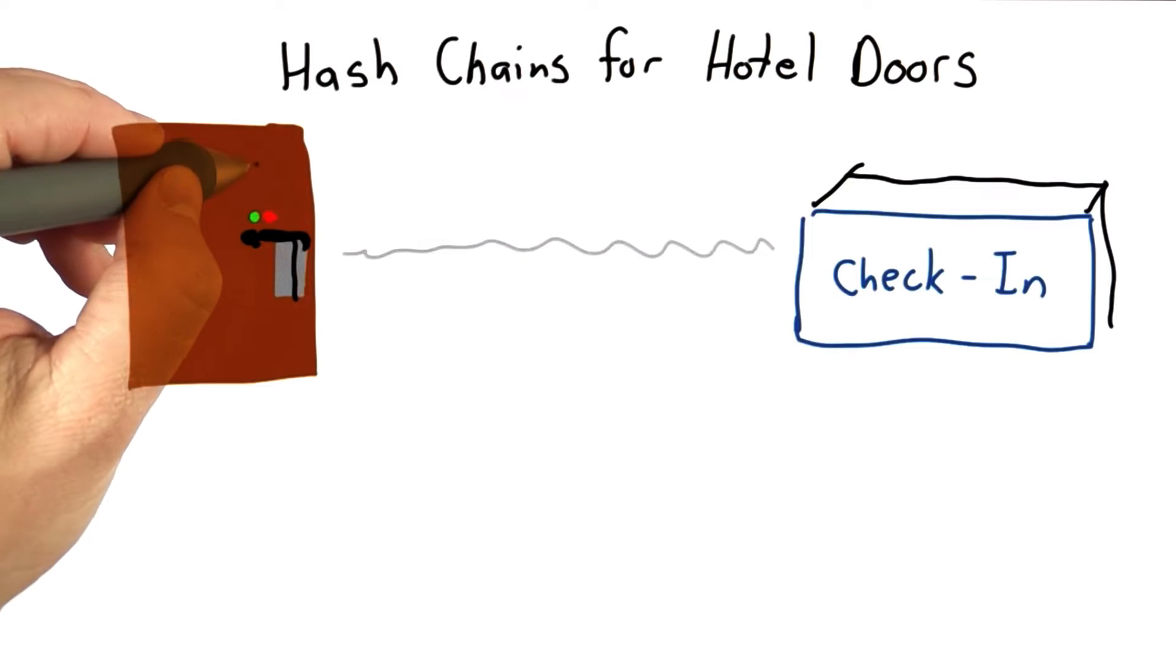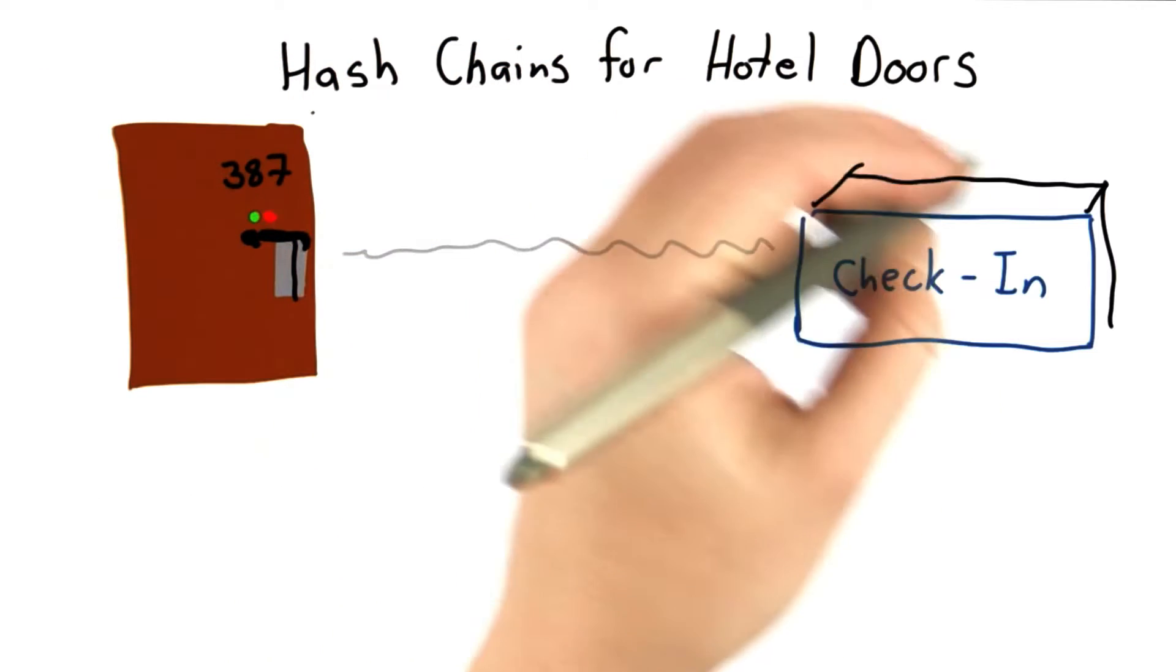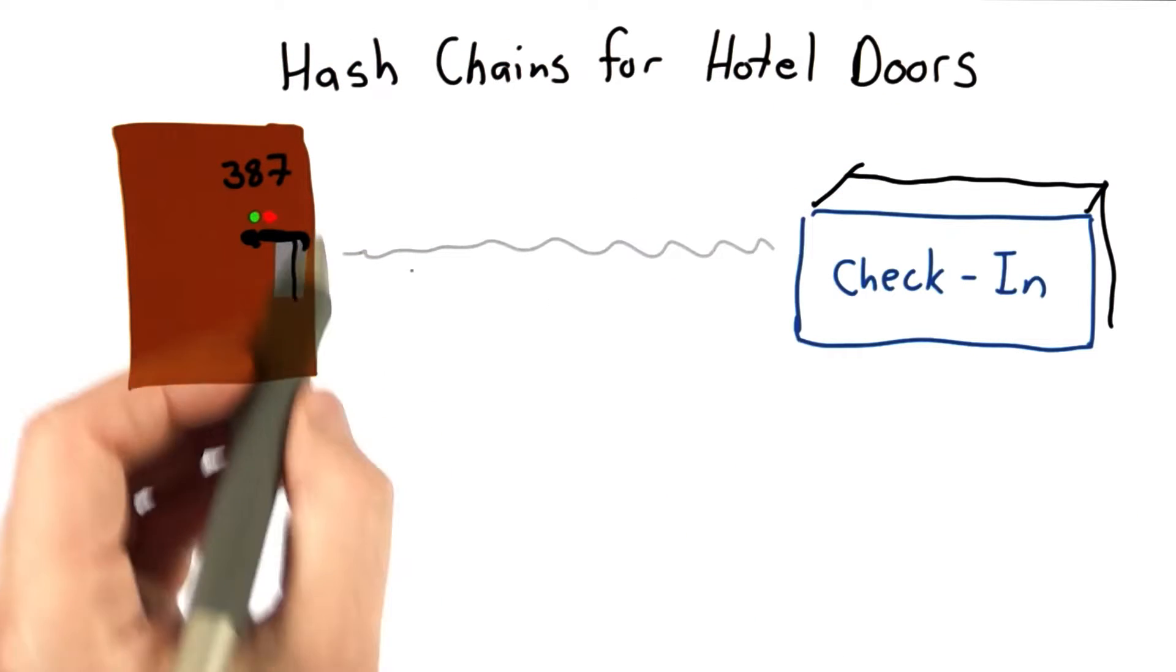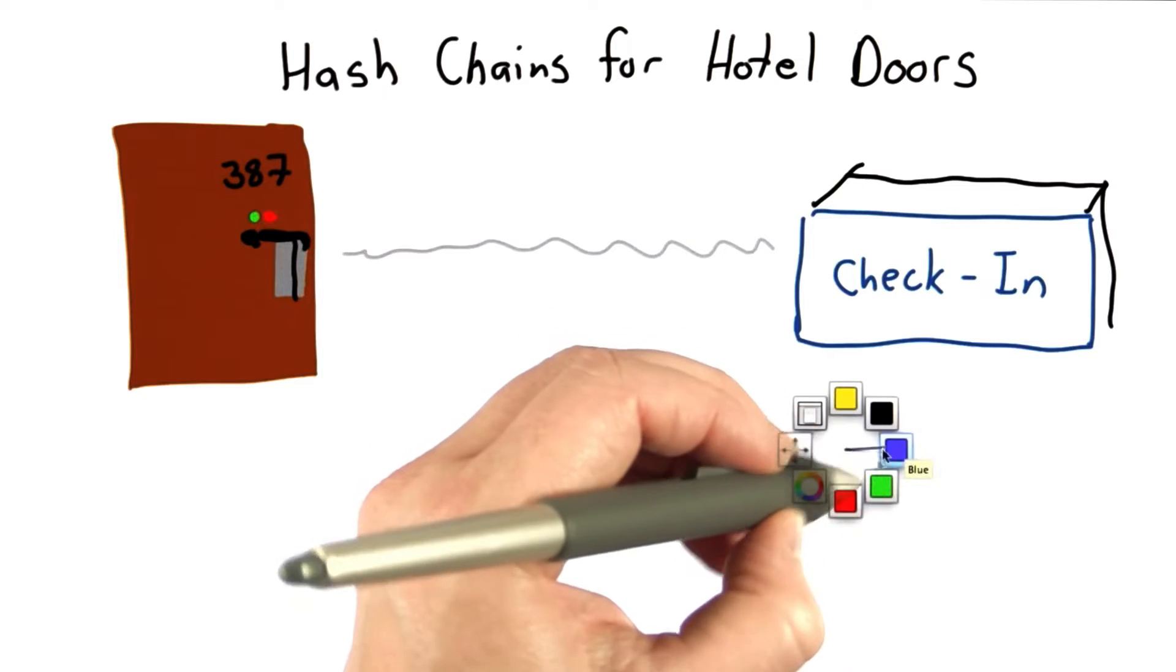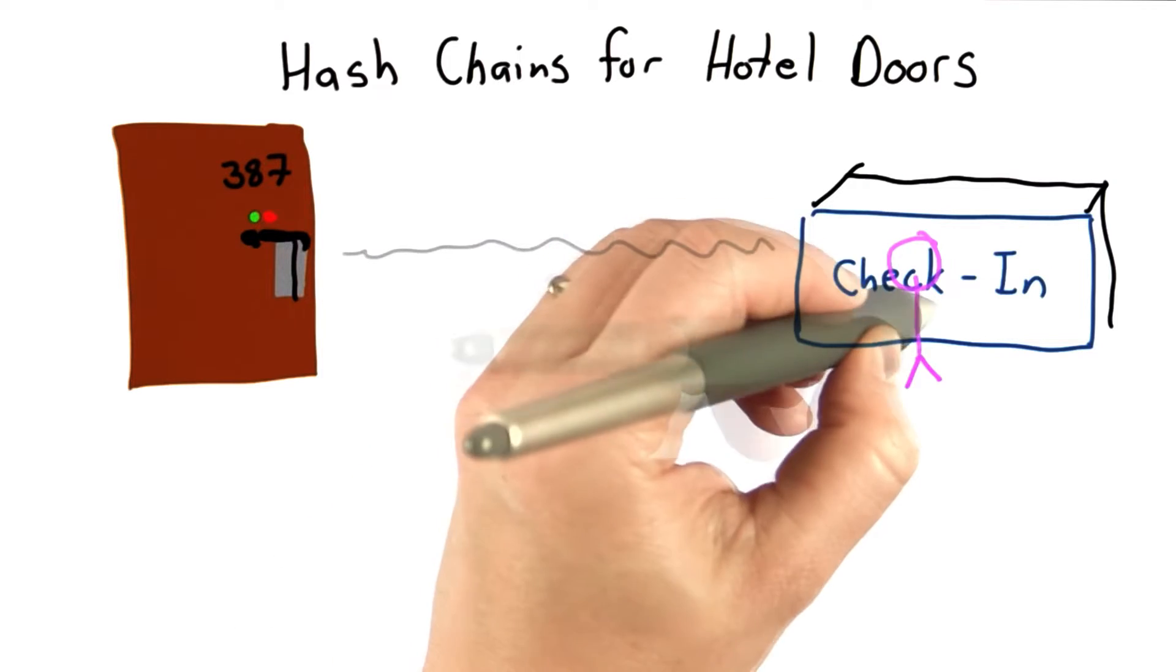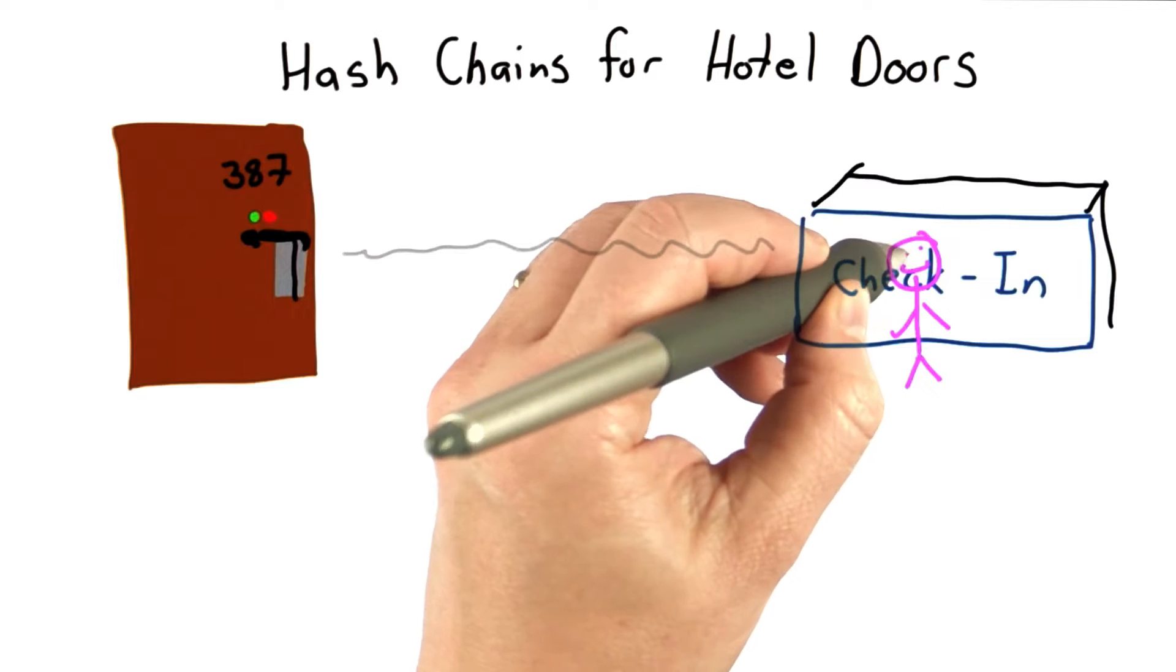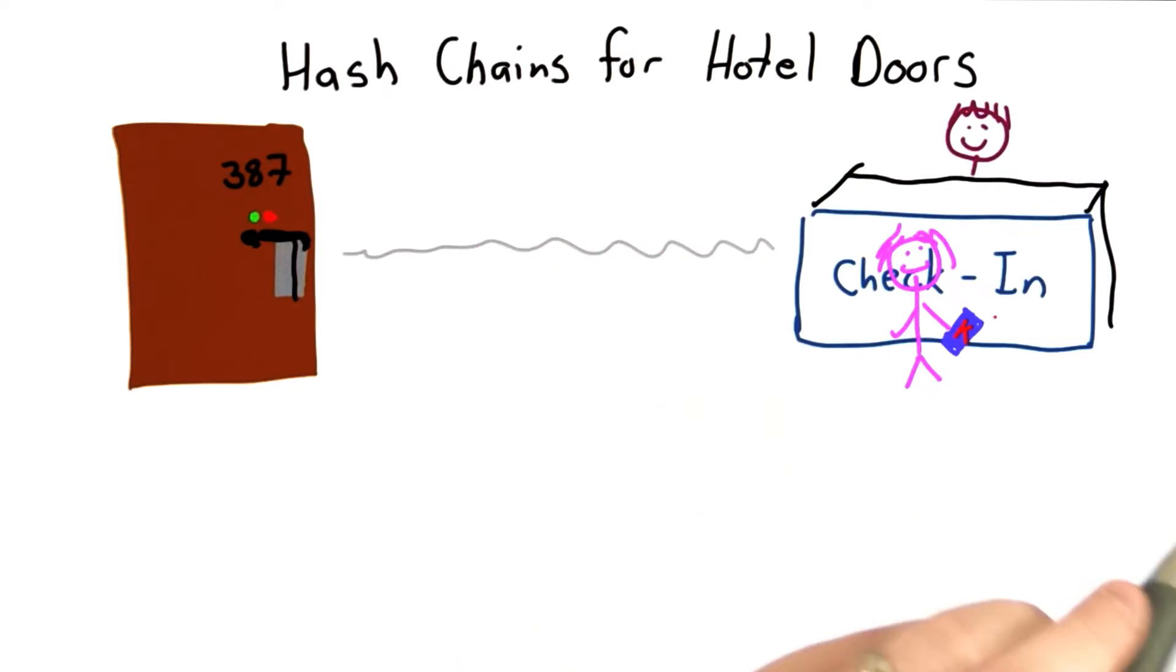So if you think about a hotel, you've got rooms. Let's say this is room 387, and you've got a check-in desk that may not be connected by any wire to the room. What you'd like to happen is when a new visitor checks in, let's say it's Alice, the desk at the check-in can give her a new key, and that key will allow her to open the door.